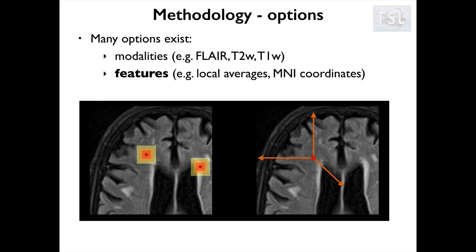Other useful features are those describing the location of the voxel — the MNI coordinates. They are particularly useful if the lesions being segmented have a well-known spatial pattern. For example, white matter hyperintensities are very common around the ventricles, so having information about whether a voxel is in that area can improve the segmentation.